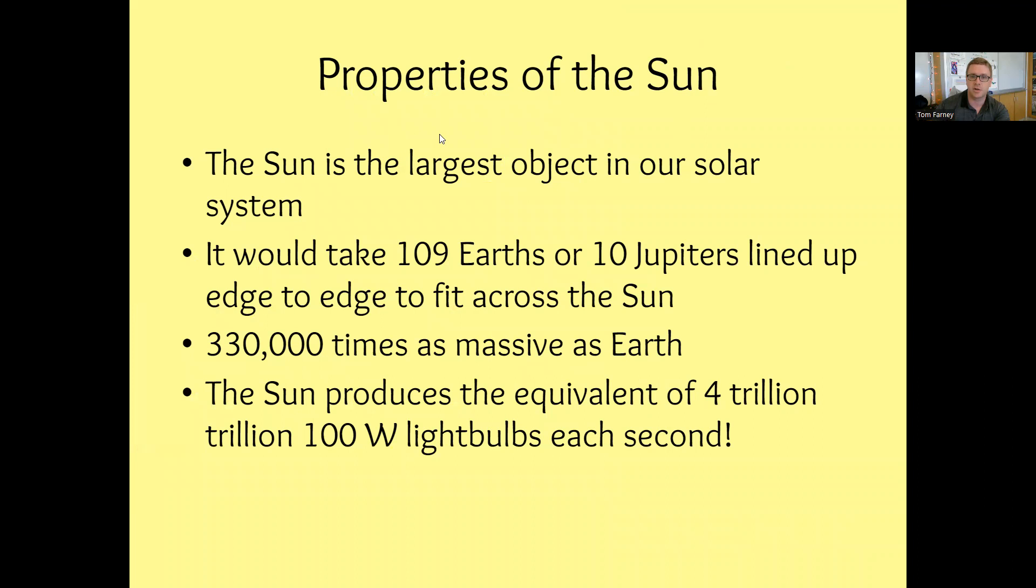The sun is by far the largest object in our solar system. To put it in size perspective, it would take about 109 Earths or 10 Jupiters lined up side to side, edge to edge, to fit across the sun.